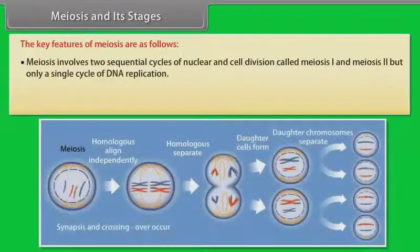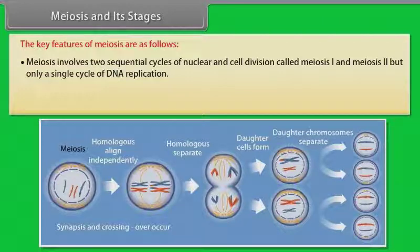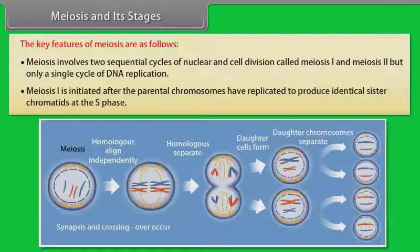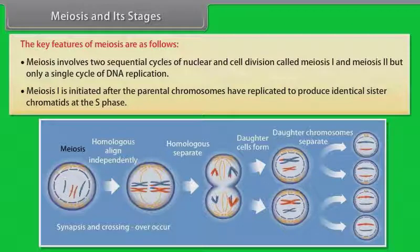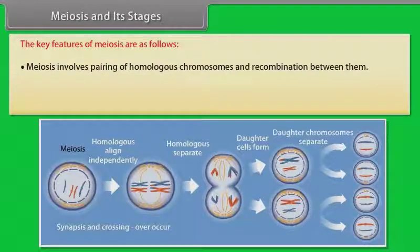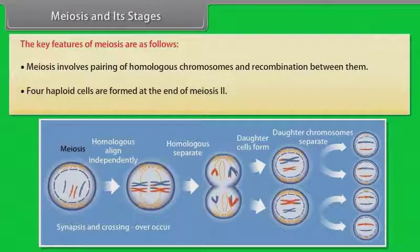The key features of meiosis are as follows: meiosis involves two sequential cycles of nuclear and cell division called meiosis I and meiosis II, but only a single cycle of DNA replication. Meiosis I is initiated after the parental chromosomes have replicated to produce identical sister chromatids at the S phase. Meiosis involves pairing of homologous chromosomes and recombination between them. Four haploid cells are formed at the end of meiosis II.